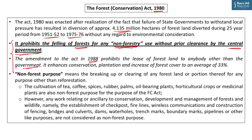Certain things have been defined in the act itself as forest purpose or non-forest purpose. Any activity that helps in the conservation of forest is forest purpose — for example, establishment of check posts, fire lines, construction of fencings, wireless communications used for forest conservation, bridges and dams, waterholes and trench marks. These are considered forest purpose and not non-forest purpose.